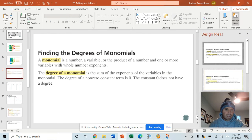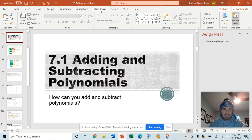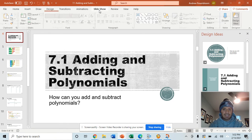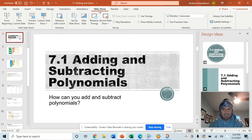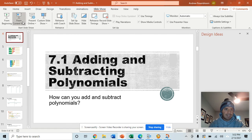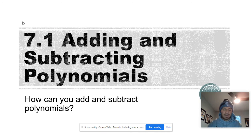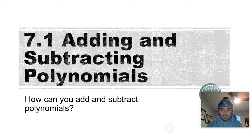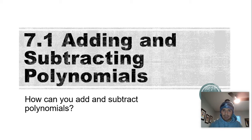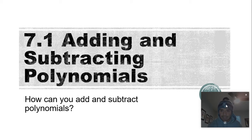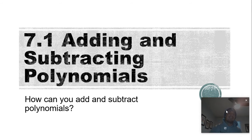All right, guys, we are into Chapter 7. Chapter 7 is arguably the most important chapter in Algebra 1. It deals with polynomial equations and factoring. This video is a shout-out to Owen in Mr. Mazzo's Block 1 class.